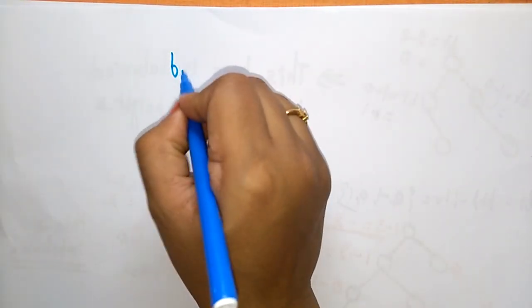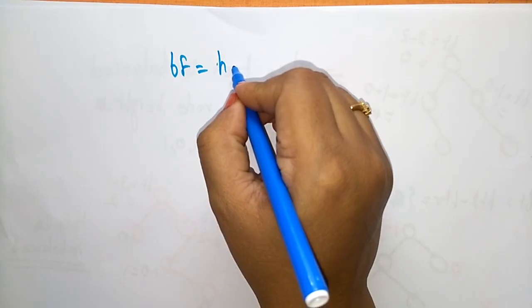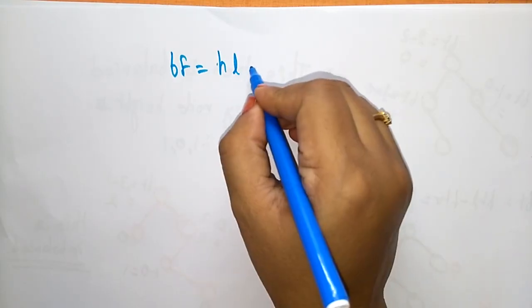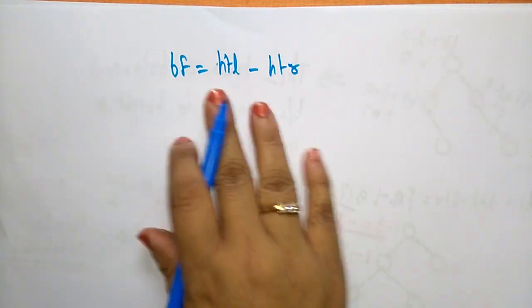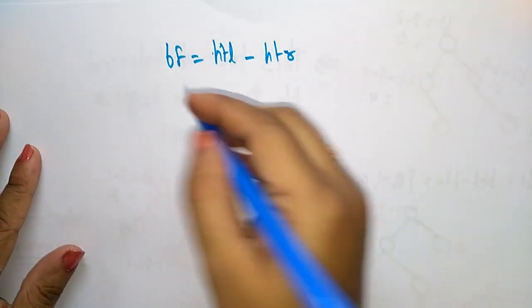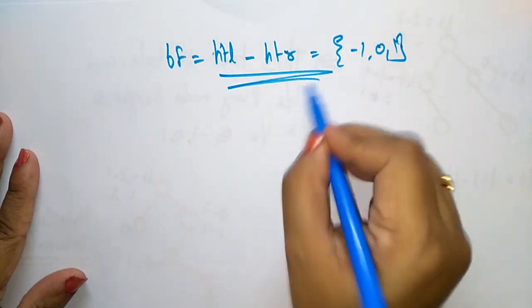Hi students, welcome back. Let us continue with the AVL trees. So in the previous video, I explained about what is an AVL tree — AVL trees are the height-balanced binary trees — and how we are going to calculate the balance factor of any tree. The formula is: balance factor equals height of the left subtree minus height of the right subtree, and BF should be in the range of minus 1, 0, and 1. This is the condition for AVL trees.